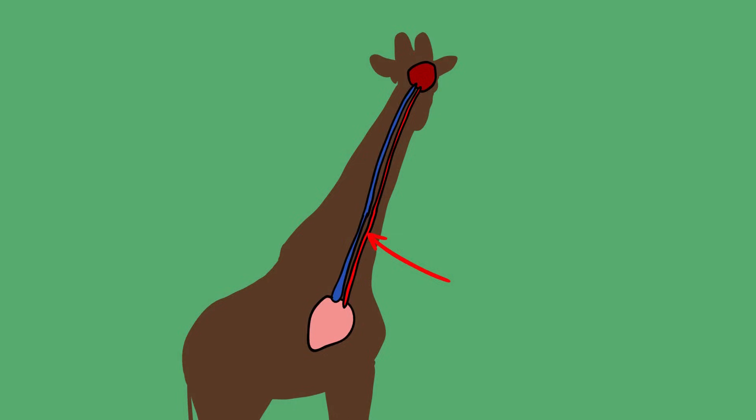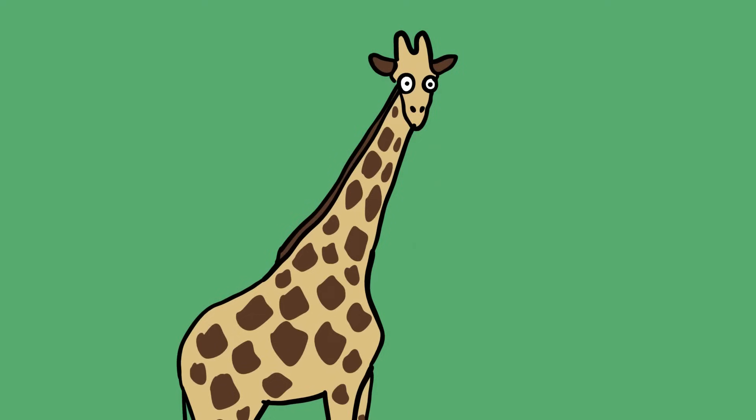Giraffes have an unusual jugular vein. This is the vein that carries blood back to the heart from the head, and in most animals, it does not contain muscle. The giraffe's jugular vein does. This muscled jugular vein, along with its thick skin and powerful ticker, increases the animal's blood pressure to about twice that of humans.